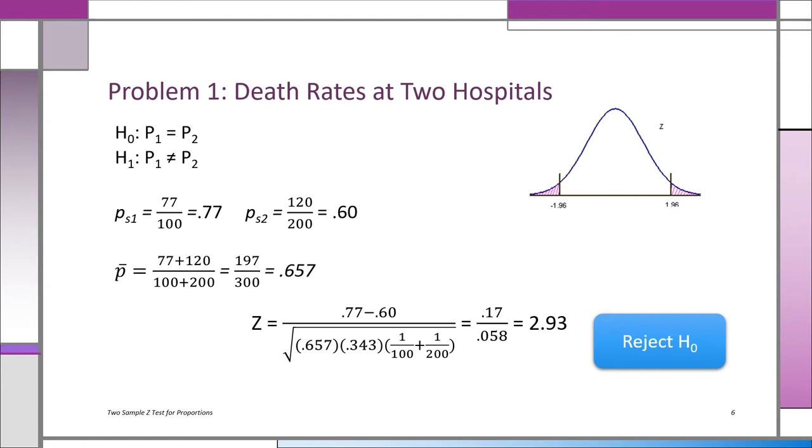So we compare 0.77 minus 0.60, so you have 0.17—there's a 17 percent difference in the numerator. And then you have this huge thing in the square root, which is a lot easier to do, but just remember to do the thing in the parentheses first. First do 1 over 100 plus 1 over 200. Then whatever you get, 0.38 times that by 0.343 times that by 0.657, take the square root, and you get 0.058. Your z-value, it's an approximate z, is 2.93.